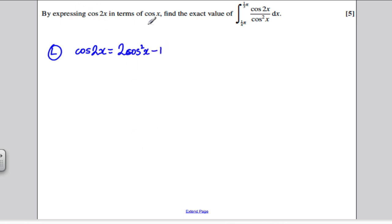So it said, by expressing cos 2x in terms of cos x, find this. The obvious thing to do is where you see cos 2x, substitute 2 cos squared x subtract 1.